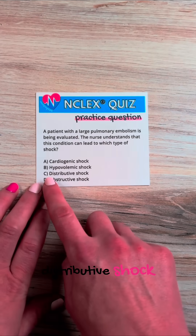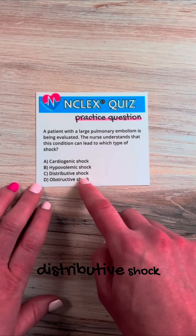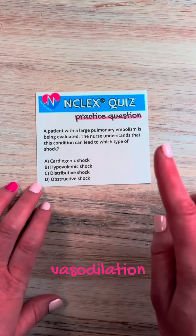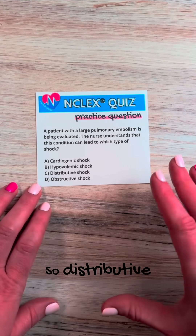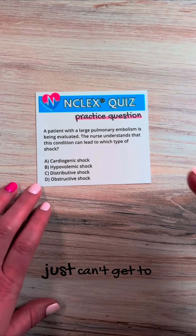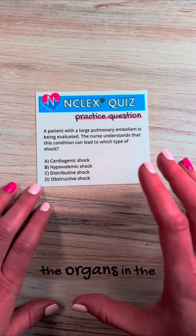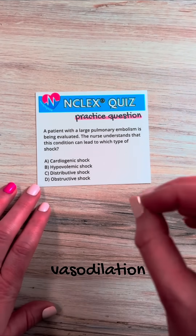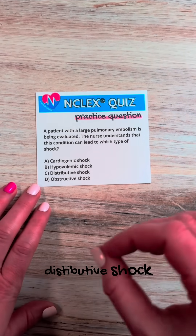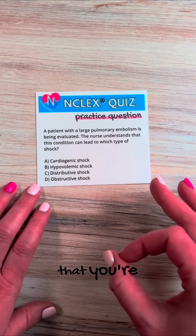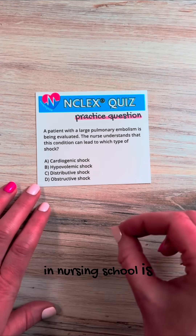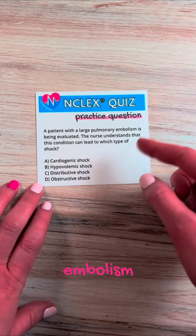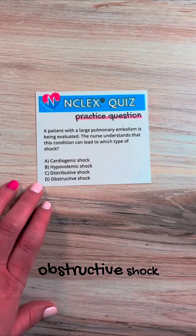Distributive shock — anytime you see distributive shock, there's one word you should be thinking of: vasodilation. Distributive shock is where blood flow can't get to the organs because there's massive vasodilation. The big one for distributive shock that you're probably most familiar with in nursing school is sepsis. So here, the question is specifically talking about a pulmonary embolism, so that is obstructive shock.